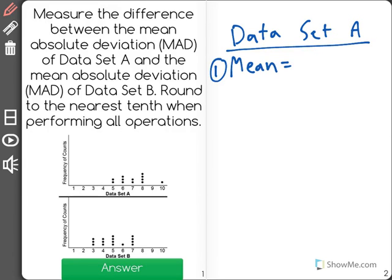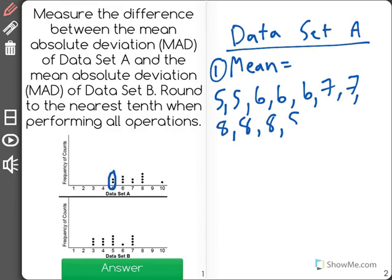So the mean of this data set, I would start by adding up all of the data values. Now remember, these two dots for five represent five twice. Three dots for six means that there are three sixes in our data set, and so on and so forth. Now when I have all of these data values listed out, I need to add them all together. The sum of these is equal to 84.